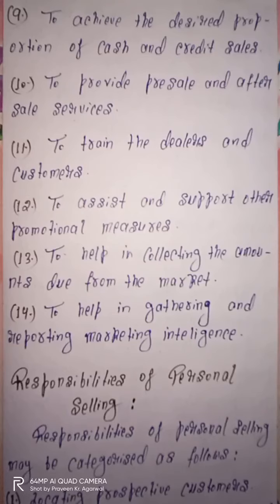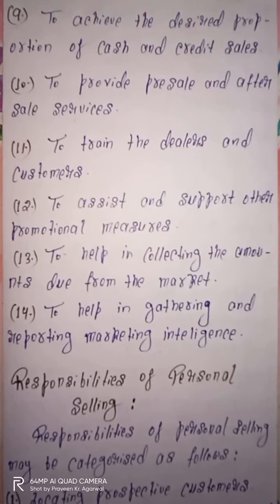Next objective is to provide pre-sale and after-sale services. Customers ko pre-sale services available karana ya phir after-sale services available karana, personal selling ke basis par aisa kiya jaana bahut had tak possible hota hai. Kyunki agar other communication tools ki baat karein — advertising hai, ya public relations hai — toh uske basis par pre-sale services aur after-sale services proper way me provide nahi ki ja sakti. Lekin personal selling ke basis par ye services proper way me customers ko provide ki ja sakti hain, jisse ki customer ka satisfaction highest level tak pahunch jata hai, aur customer aapka loyal customer me bhi convert ho jata hai.